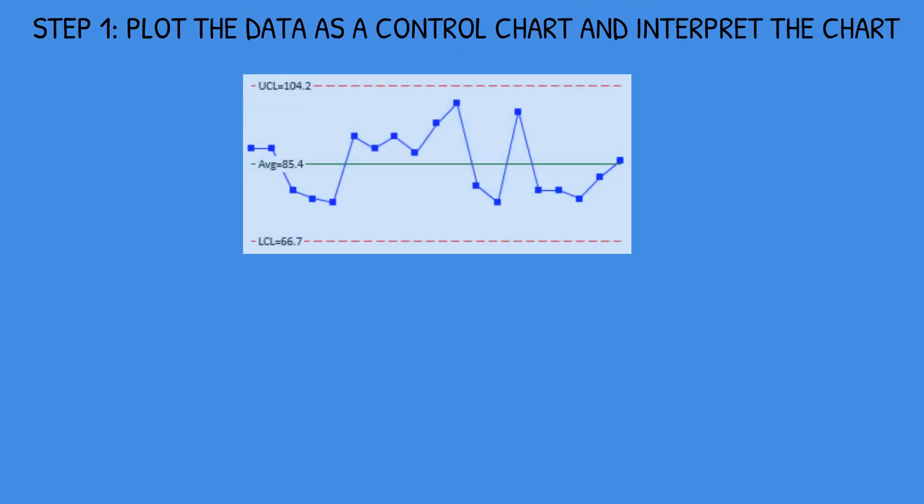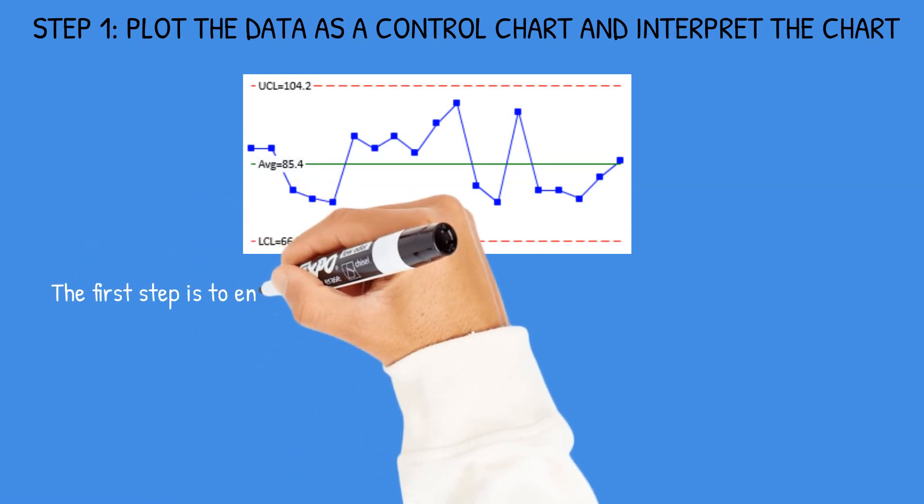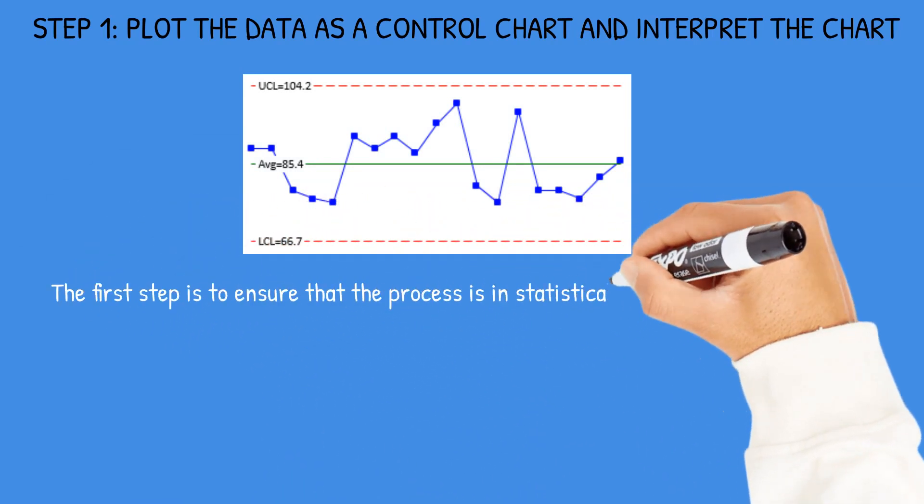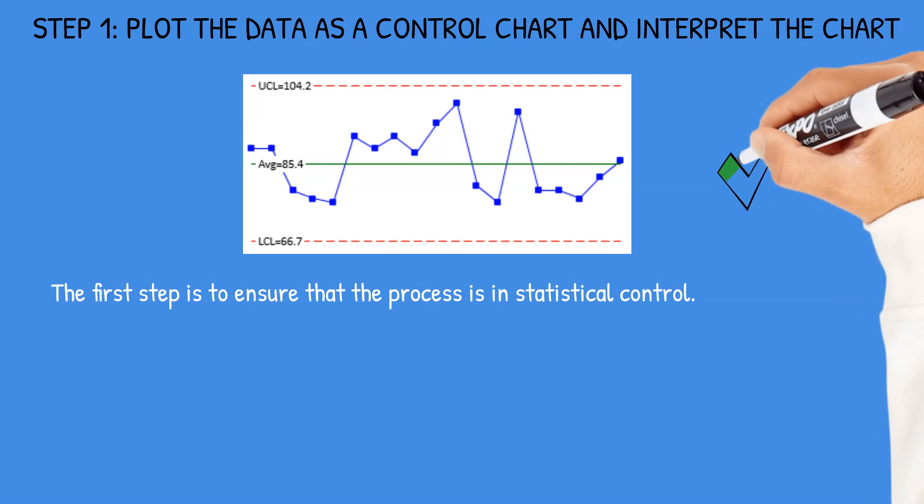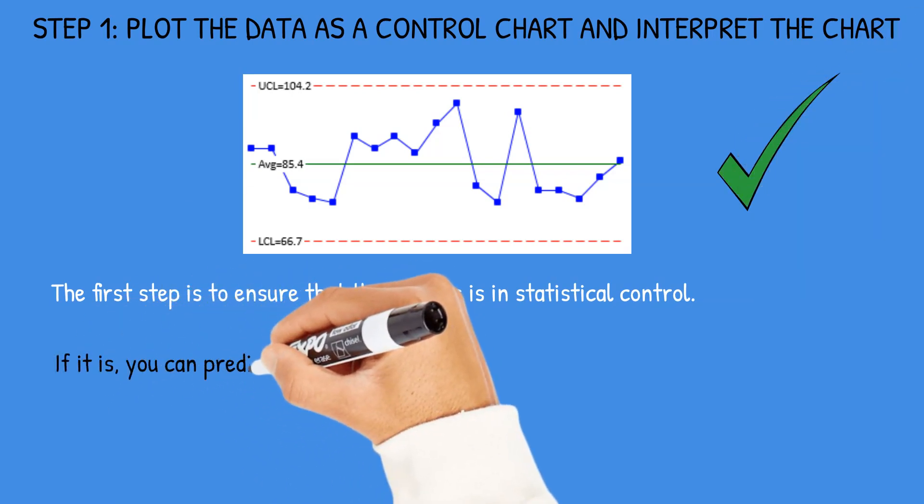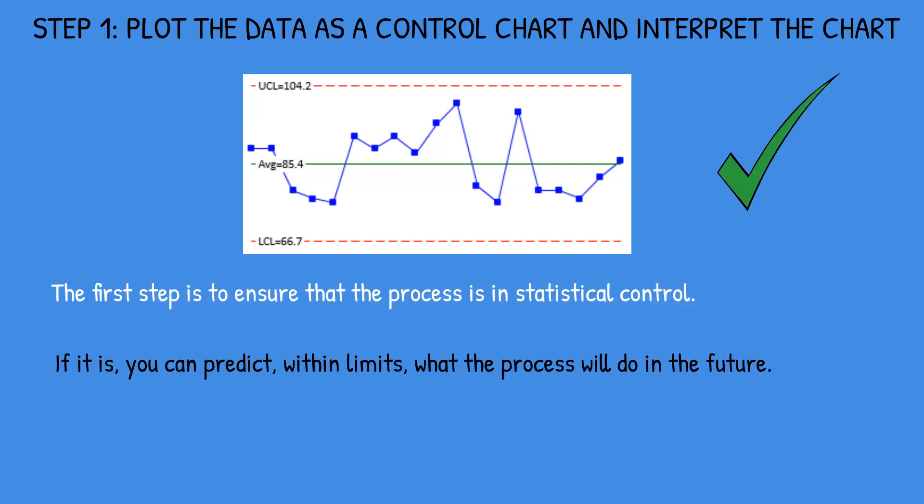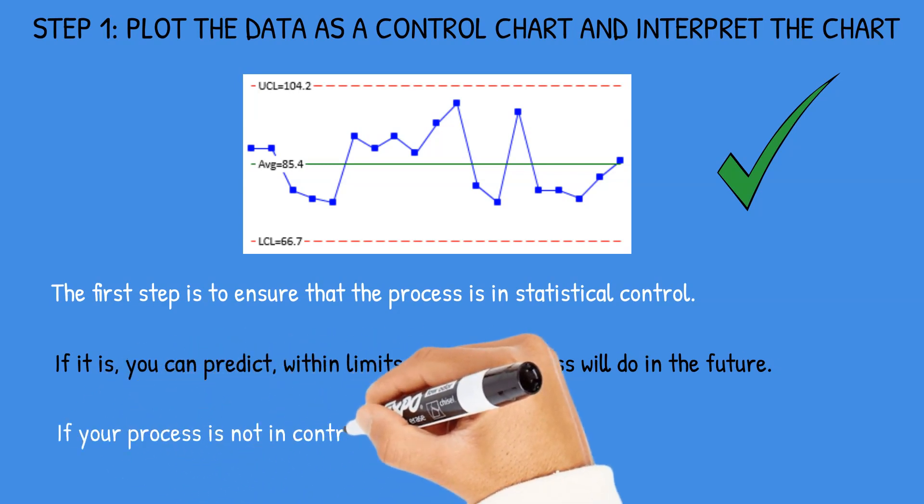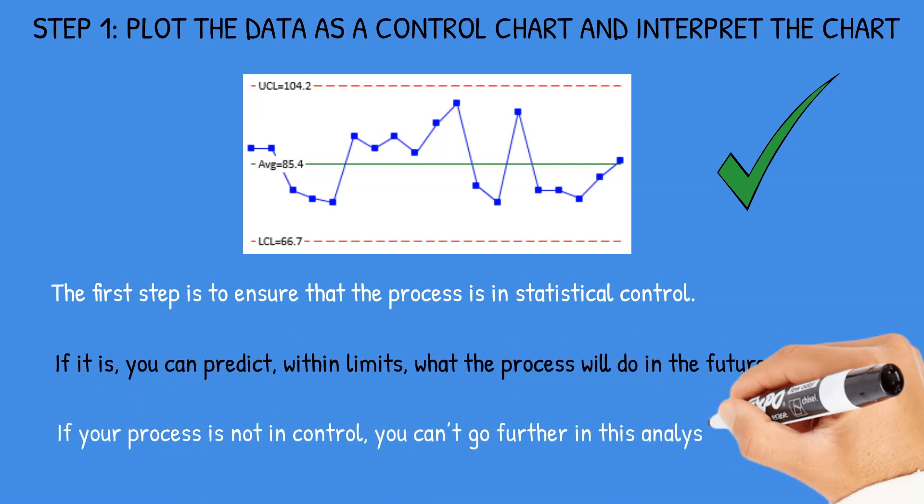Step one is to plot the data as a control chart and interpret the chart. The control chart has the data plotted as shown with average and control limits. The first step is to ensure that our process is in statistical control. If it is, you can predict within limits what the process will do in the future. If it's not in control, you can't go any further with this analysis.